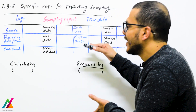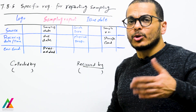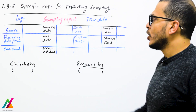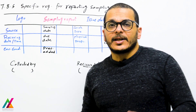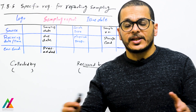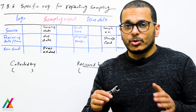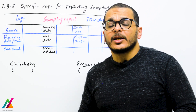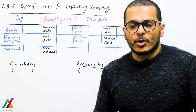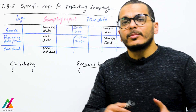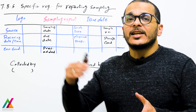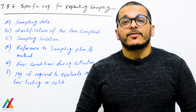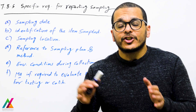Also include all parameters required to be analyzed for this sample. The report can also mention who collected the sample and who received it. You can also refer to the sampling plan and sampling method used. Note that there is no need to add measurement uncertainty to this report — the sampling measurement uncertainty will be added to the total combined measurement uncertainty.